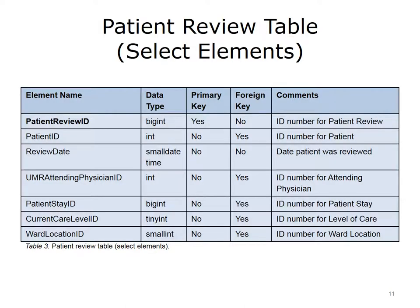The central functionality of the NUMI application is reviewing a patient's stay. This slide shows a description of the table that stores data relating to the review. Only select elements or fields are shown to simplify the example. The primary key of the table is the patient review ID, which is a bigint, or an integer that uses more bits for storage than an int. Many of the elements are foreign keys to other tables, which is to be expected in a table for reviews. A review is for a particular patient who has an attending physician, a current stay, a current care level, and a ward location. It also is done on a particular date. This table creates relationships between the patient, physician, patient stay, care level, and ward location tables.